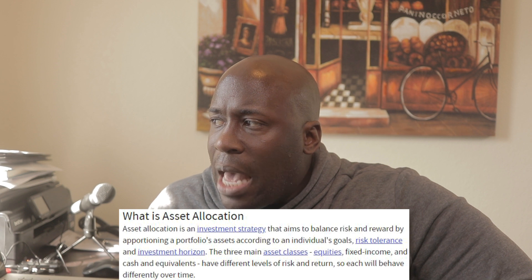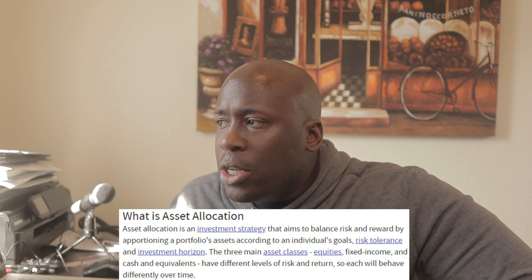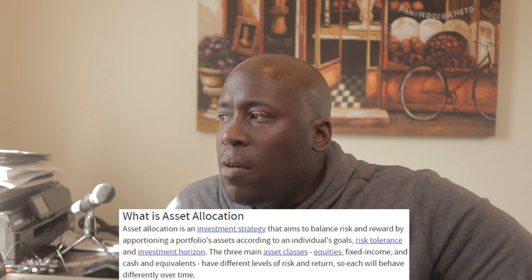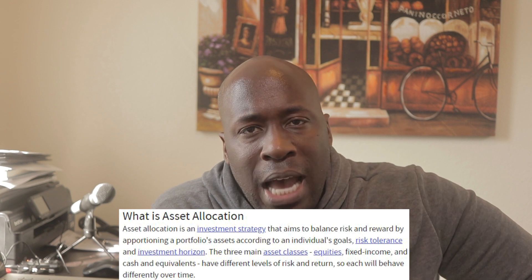The three main asset classes — equities, fixed income, and cash — have different levels of risk and returns, so each will behave differently over time. It's basically diversification in a nutshell: where do you have all your money? ETFs, index funds, bond securities, individual stocks, etc. The more diversification you have, depending on how you allocate them, will dictate your future returns.